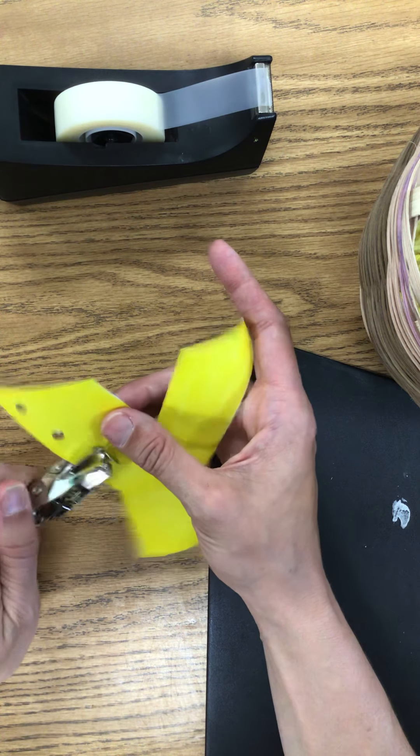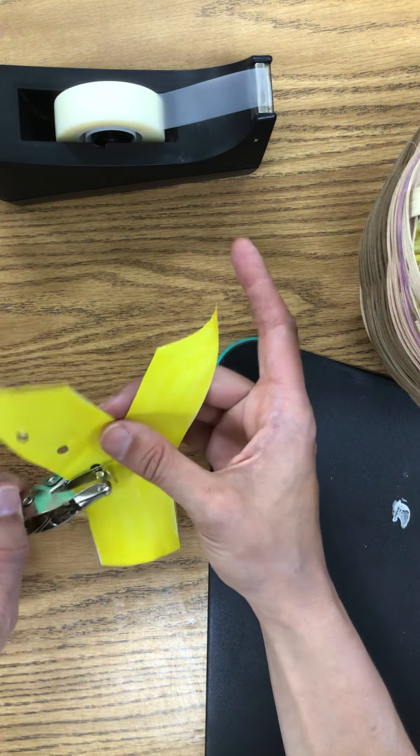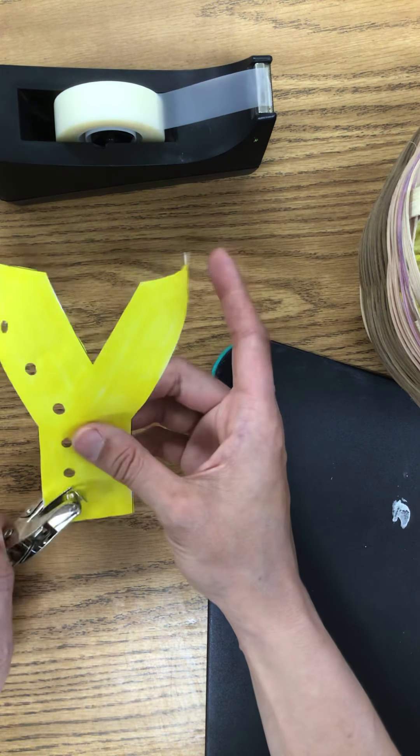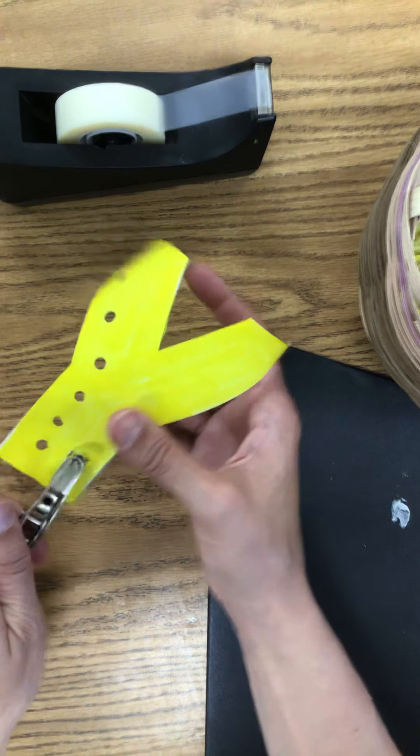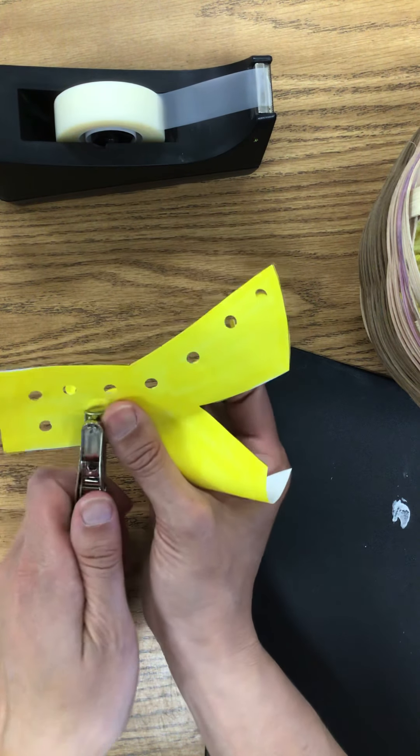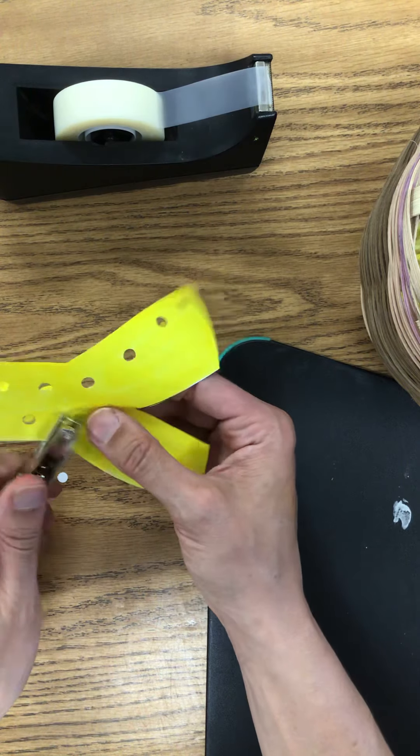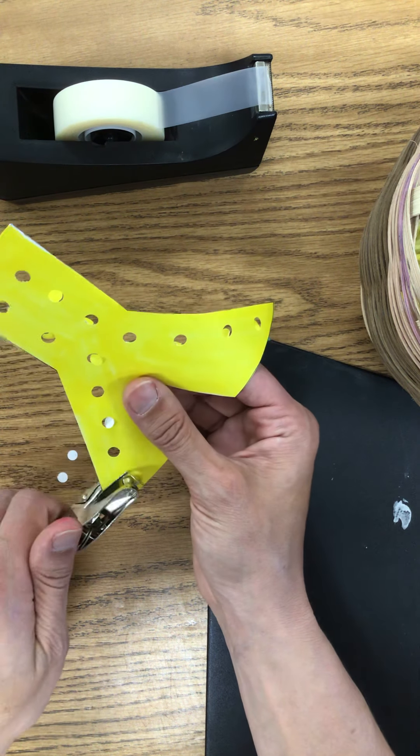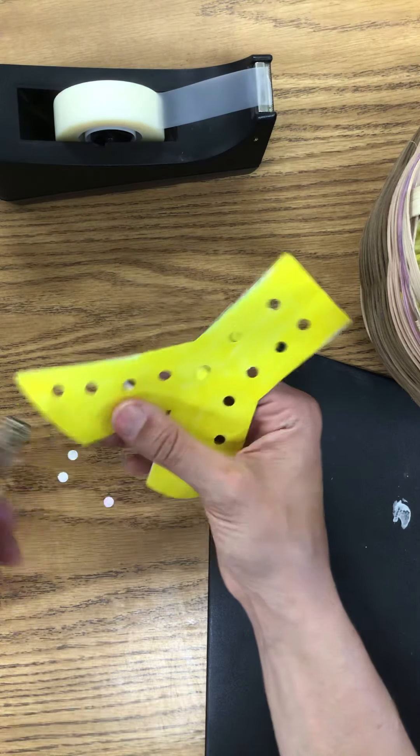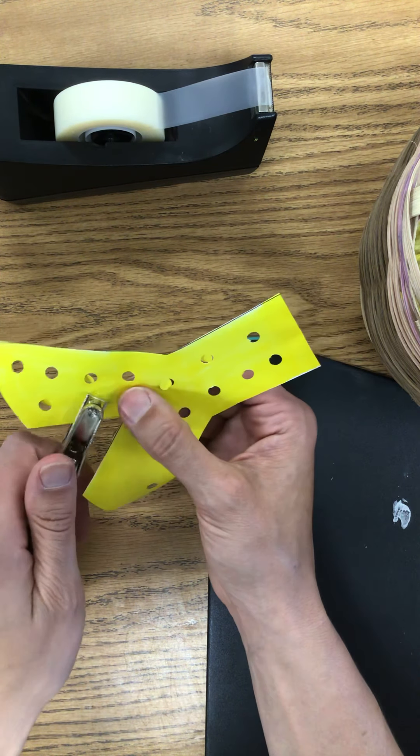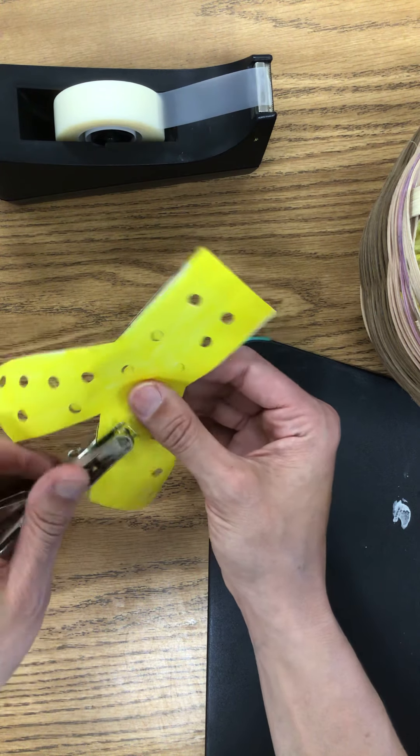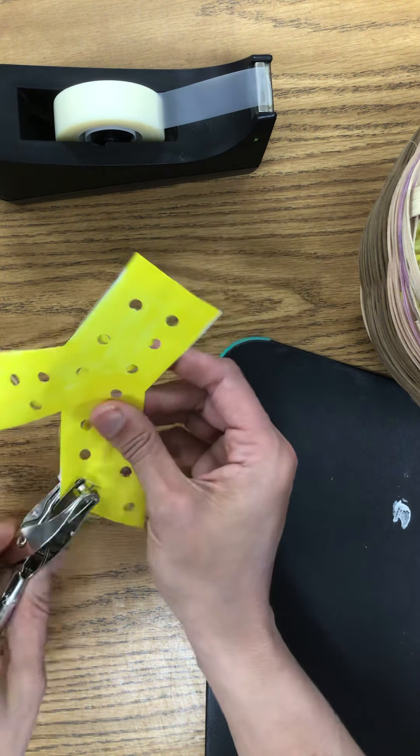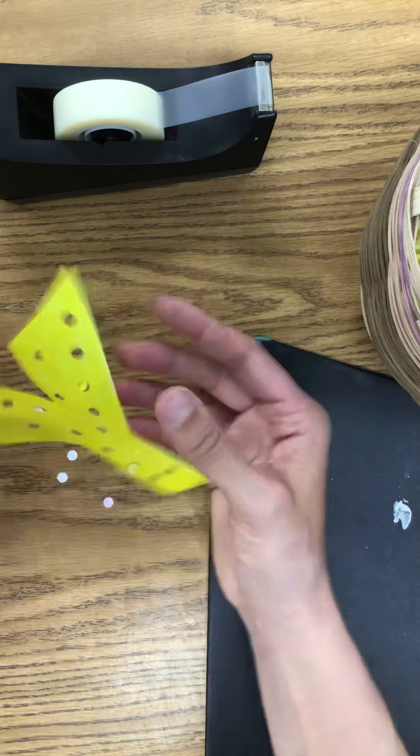But if you don't have a hole punch that is fine. You can also glue yarn to your letter Y so then you wouldn't have to cut it out either. You could just draw your letter Y and then glue some yarn onto it if you have some scrap yarn laying around. If you don't have yarn you can draw squiggle lines so that it looks like yarn. That's always fun to do as well. So there's lots of ways to do this project. There isn't just one way. This is just one way that I'm showing you.